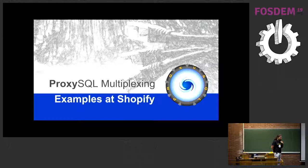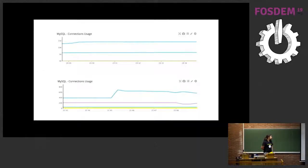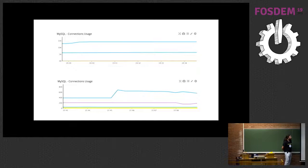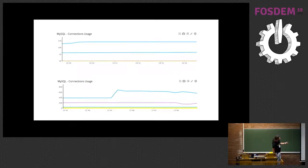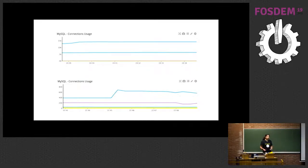Let's show some examples of how ProxySQL helped improve performance using multiplexing. These are performance improvement examples from Shopify, who are using ProxySQL on all their infrastructure. They were running benchmarks with the same traffic directly on MySQL and through ProxySQL. You can easily see the difference: we are close to 15,000 connections with MySQL, while here we are barely around 700 with ProxySQL - the number of connections was 5% of the original.